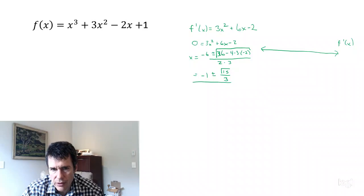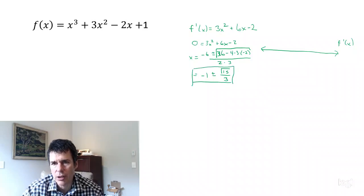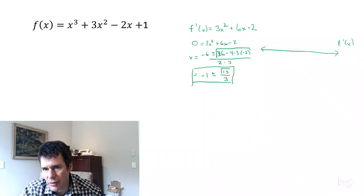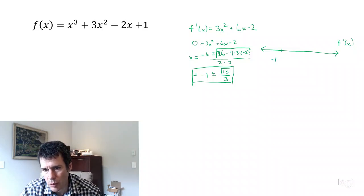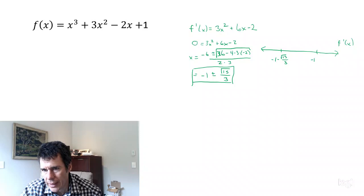So these two x values are where the first derivative is 0. We'll put them on our sign chart: negative 1 minus square root of 15 over 3, and negative 1 plus square root of 15 over 3.